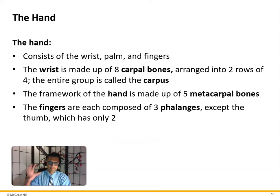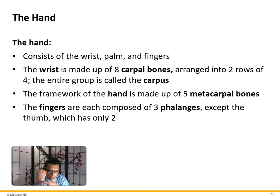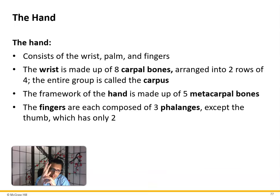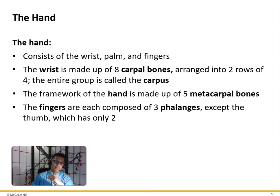The hand consists of the wrist, palm, and fingers. The wrist is made up of eight carpal bones, which allow for wrist flexion and extension. The framework of the palm is made up of five metacarpals. The fingers each consist of three phalanges — proximal, middle, and distal — except the thumb, which only has two: proximal and distal, with no middle phalanx. This makes a total of 30 bones in the upper extremity.